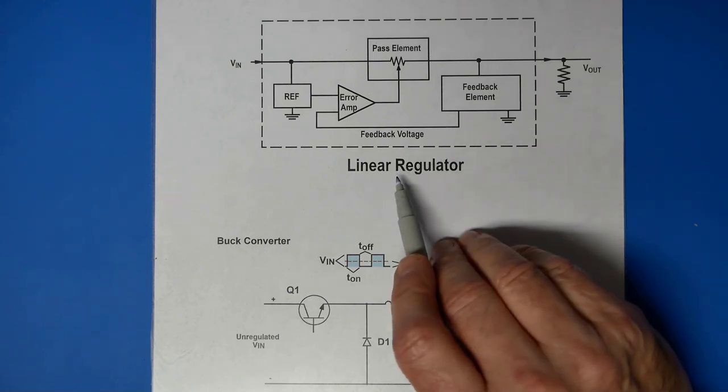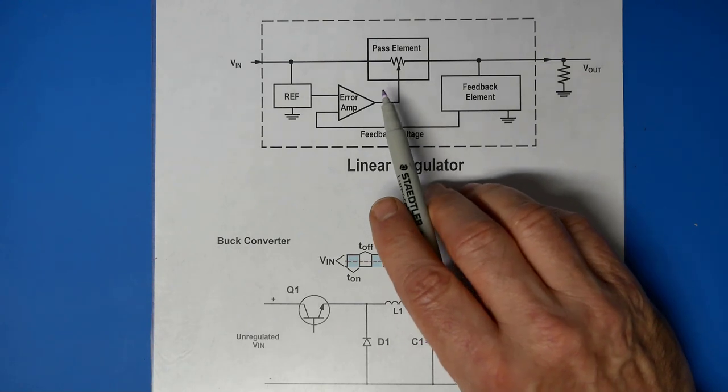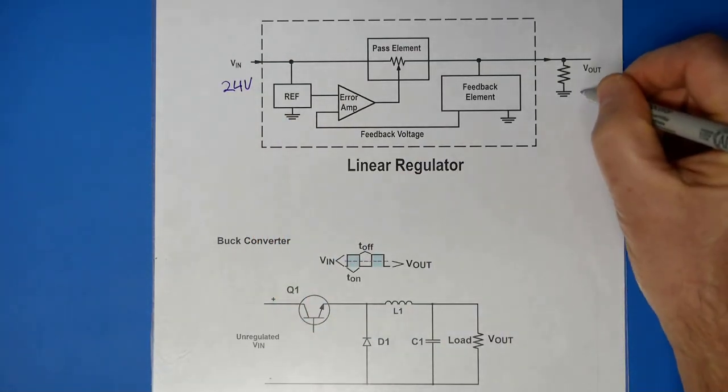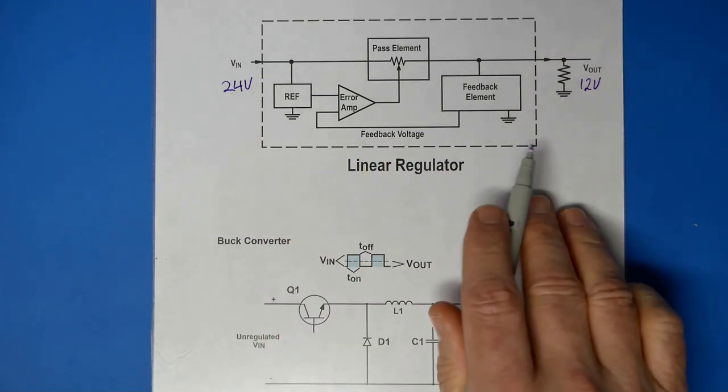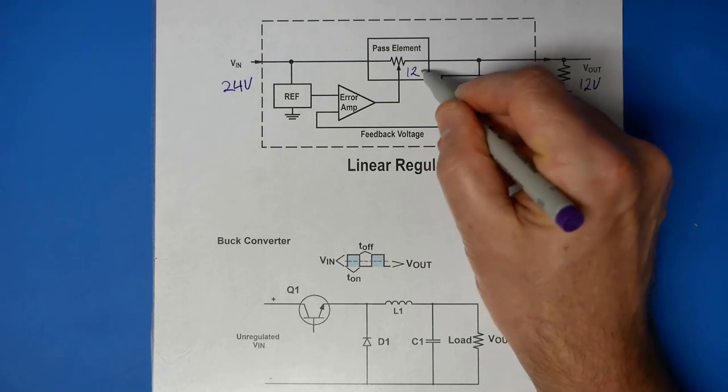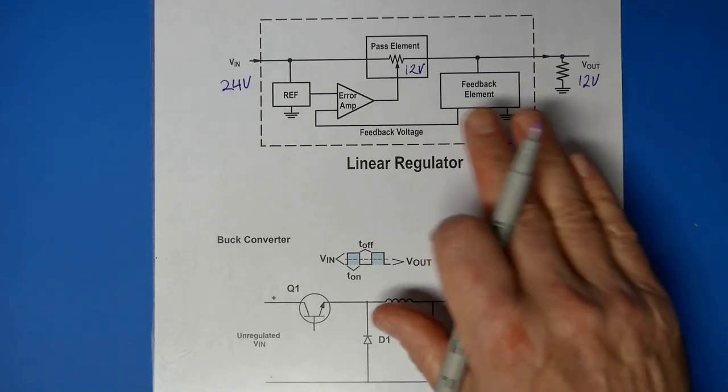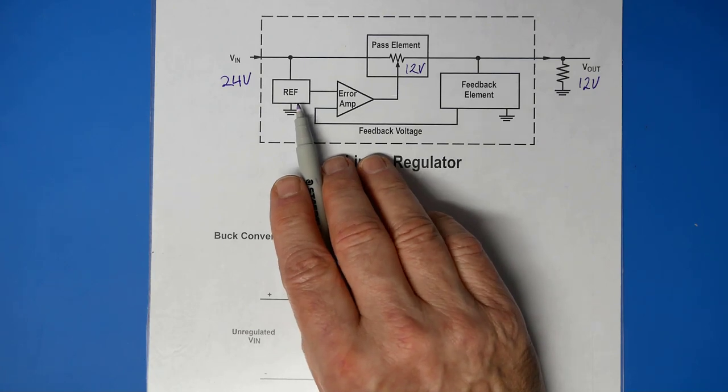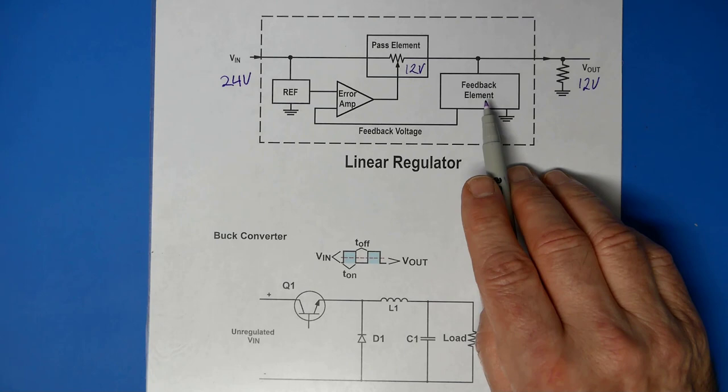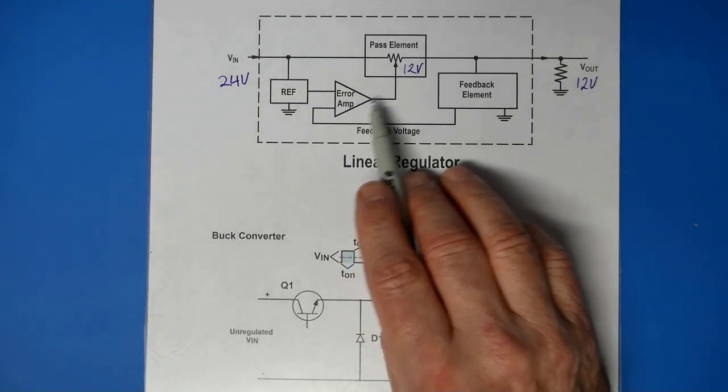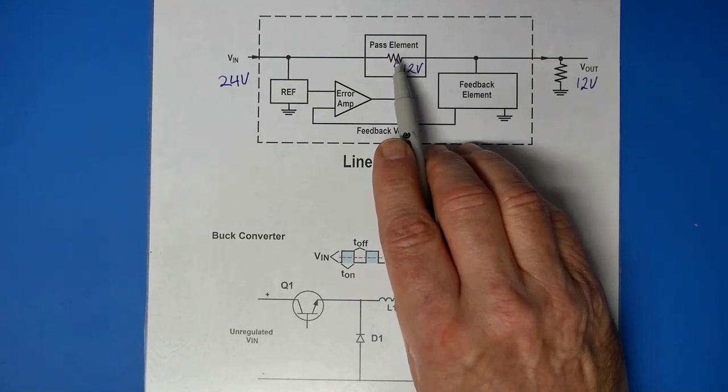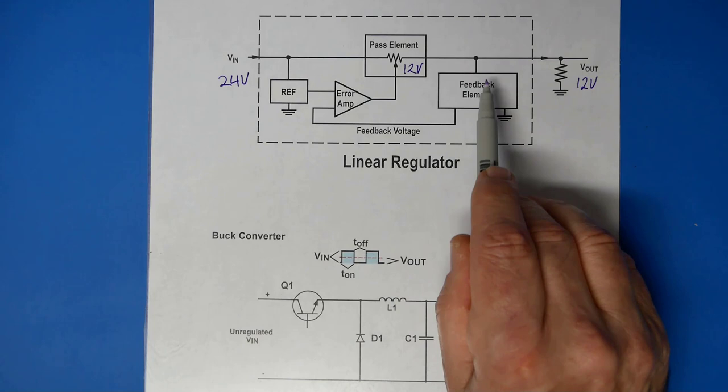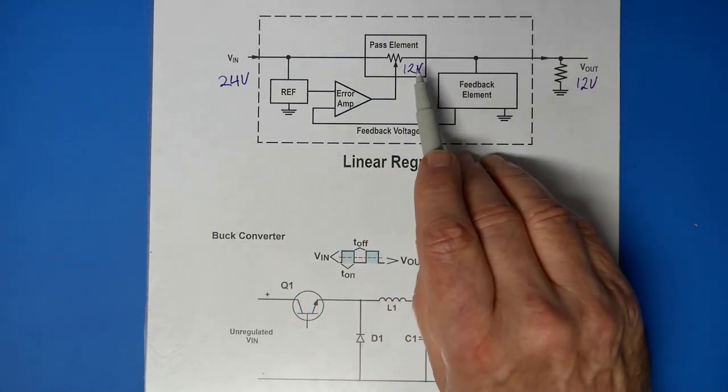One of the problems with linear regulators is that there has to be a voltage drop on a pass element that's in the circuit. If we have 24 volts at our input and 12 volts at our output, the difference voltage between those two points has to be dropped on our pass element. So 12 and 12 gives us the 24 total. The way the circuit will actually function is a reference voltage is generated and we also have a feedback voltage from the output connected to this error amp.